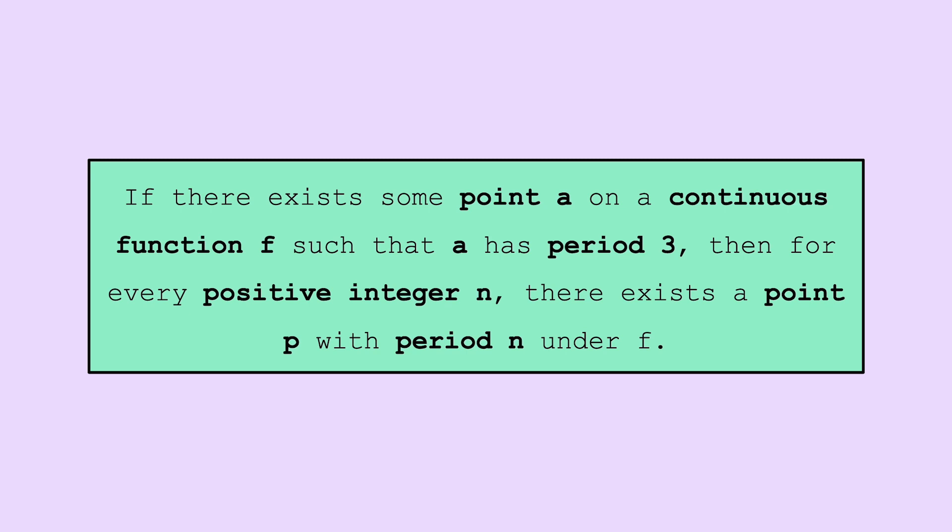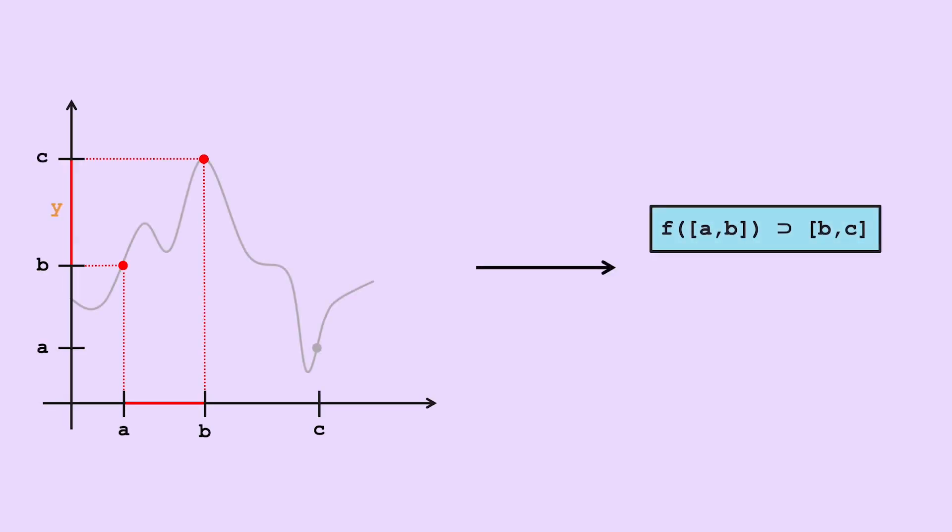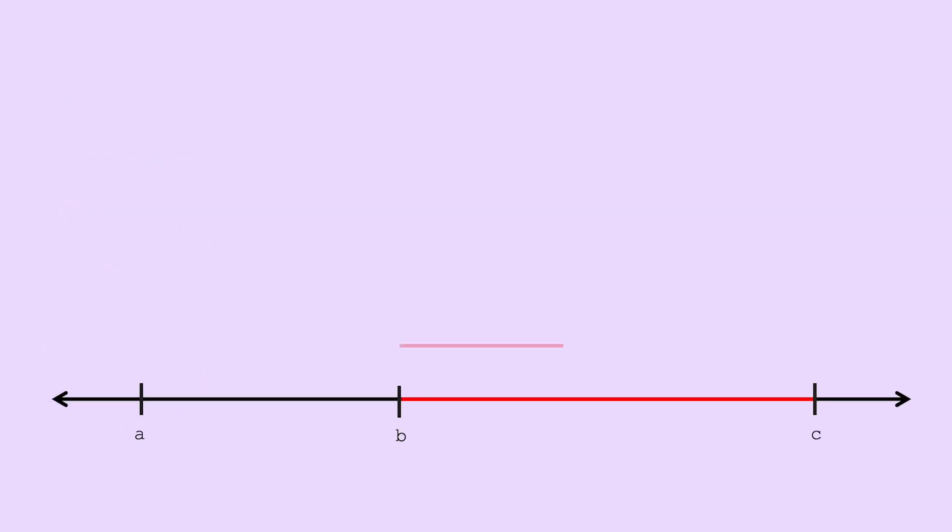Just to recap how we proved this: firstly, we saw that because f has a point with period 3, f of ab contains bc, and f of bc contains ac. Then, we created a sequence of intervals that progressively became smaller, where f of one of the intervals gives you the next interval in the sequence. Iteratively applying f, each interval in the sequence will eventually become bc.